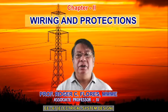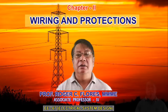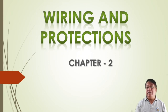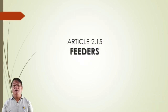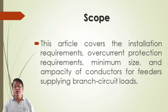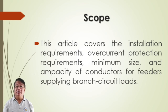Chapter 2 is Wiring and Protections. We have Article 2.15, which will discuss feeders. The scope of Article 2.15 covers the insulation requirements, overcurrent protection requirements, minimum size, and positive conductors.